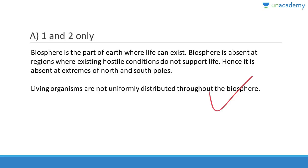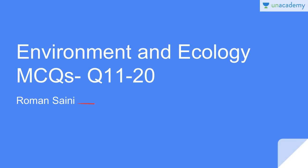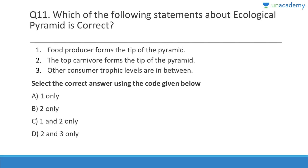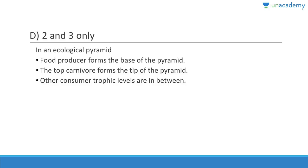Let us discuss questions 11 to 20. Question eleven: Which of the following statements about the ecological pyramid is correct? Food producer forms the tip of the pyramid — that is wrong; food producer forms the base. The top carnivore forms the tip of the pyramid — correct. Other consumer trophic levels are in between — also correct. Answer is D, two and three. In an ecological pyramid, food producer forms the base, top carnivore forms the tip, and other consumer trophic levels are in between.